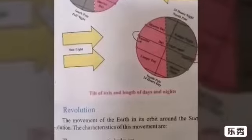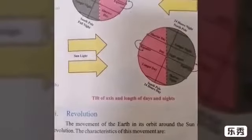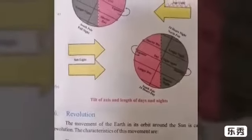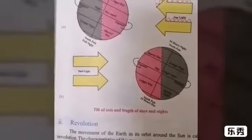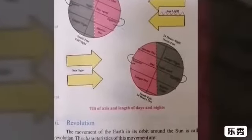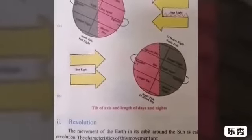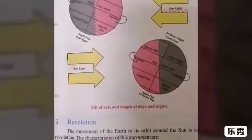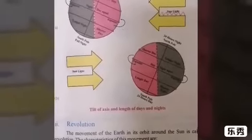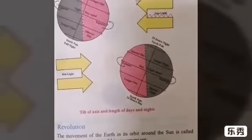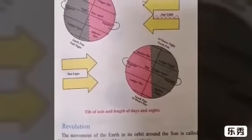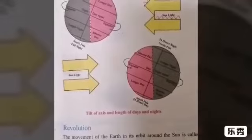Now class, our topic is revolution. When we are talking about geography, it means the movement of the earth in its orbit around the sun. This movement is anti-clockwise, and the speed of this movement is about 1,700 kilometers per hour.